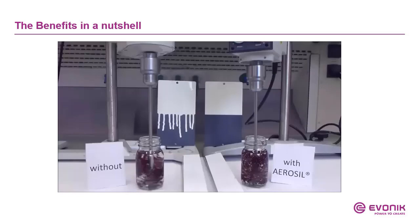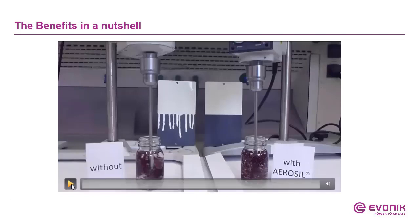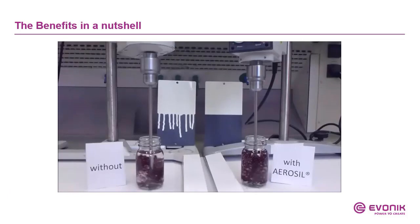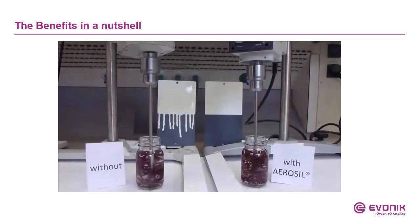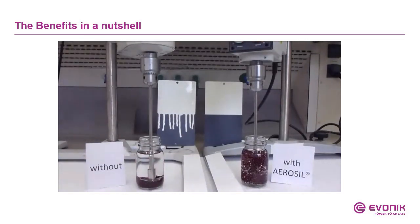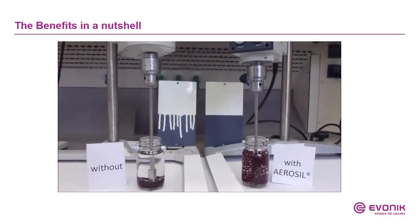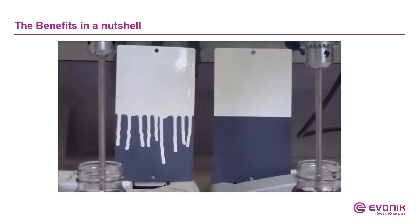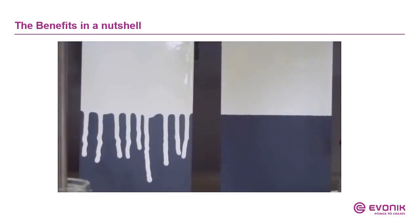This video visualizes all the effects and benefits we have spoken about. You see two receptacles with and without Aerosil — while the material is agitated, the particles move around; once the stirrer is stopped, the particles without Aerosil settle to the ground, while the matrix with Aerosil holds the particles in place. In the application example, you can see the sagging effect versus the Aerosil-equipped material without sagging.